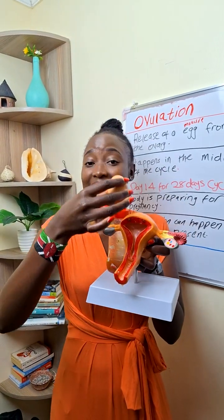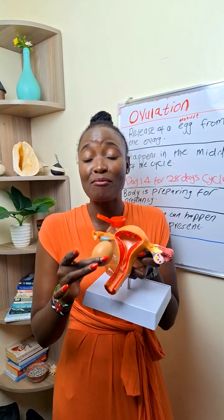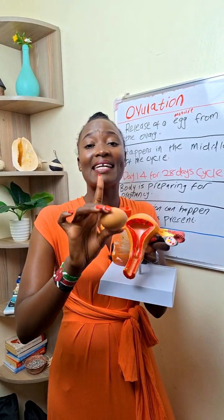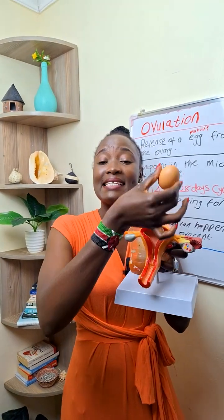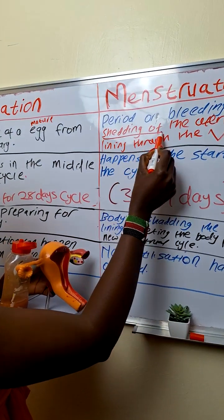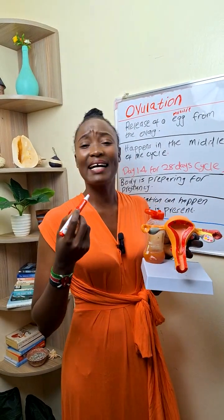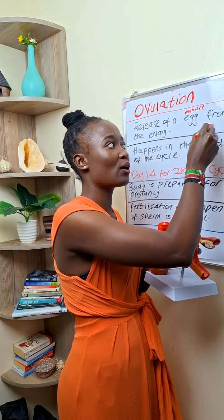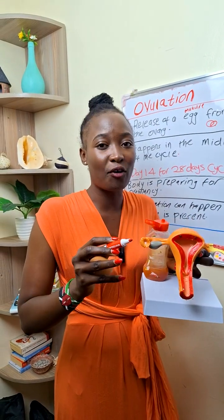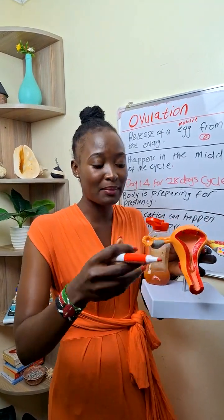Now, when this egg is released — remember, when the egg is released and it meets the sperm, fertilization occurs — but for menstruation, when this egg is released and it does not meet the sperm, it comes out as blood. That's why it's described as shedding of the uterine lining through the vagina. So when fertilization has not occurred, that particular woman is not pregnant, and therefore the egg or the uterine lining comes out as blood.